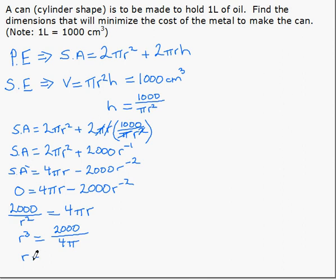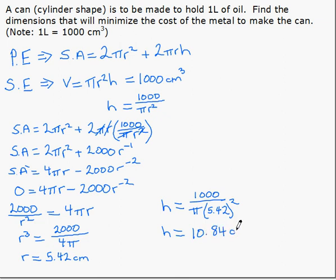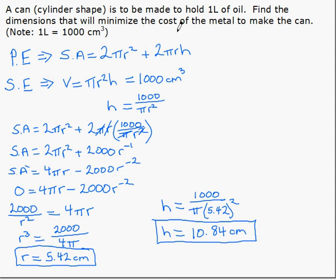Which when we solve and take the cube root gives us 5.42 centimeters. Now we have r. The question asks for the dimensions so we also need h. So we plug it in there. h is equal to a thousand over π times 5.42 squared, so h is equal to 10.84 centimeters. So r equals 5.42 centimeters and h equals 10.84 centimeters are the dimensions that will minimize the surface area or minimize the cost.